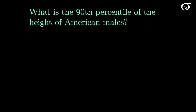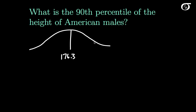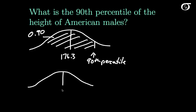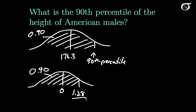Here's a different type of problem. What is the 90th percentile of the height of American males? Here's the distribution of heights with 176.3 in the middle. The value that yields an area to the left of 0.90 is the 90th percentile — that's what we want to find. One way to do this is to find the 90th percentile of the standard normal distribution first, which to two decimal places is 1.28. You can verify that using a computer or a standard normal table.